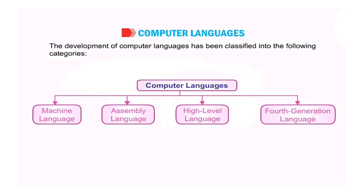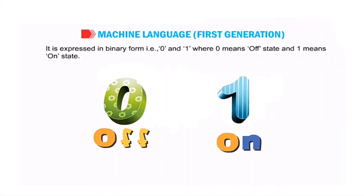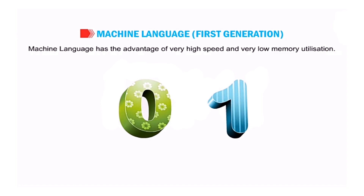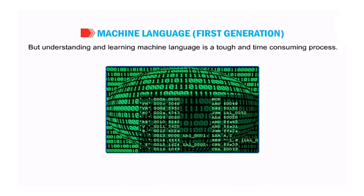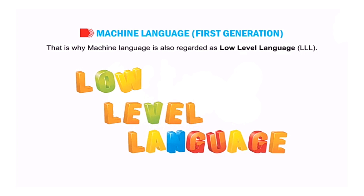The development of computer languages has been classified into the following categories: machine language, assembly language, high-level language, and fourth generation language. Machine language is the only language that a computer understands. It is expressed in binary form — zero and one — where zero means off state and one means on state. Machine language has the advantage of very high speed and very low memory utilization. But the problem is that understanding and learning machine language is a tough and time-consuming process. It's pretty difficult to write and debug — meaning remove errors from programs written in machine language. It's also extremely machine dependent. That's precisely why machine language is also regarded as low-level language, or LLL.